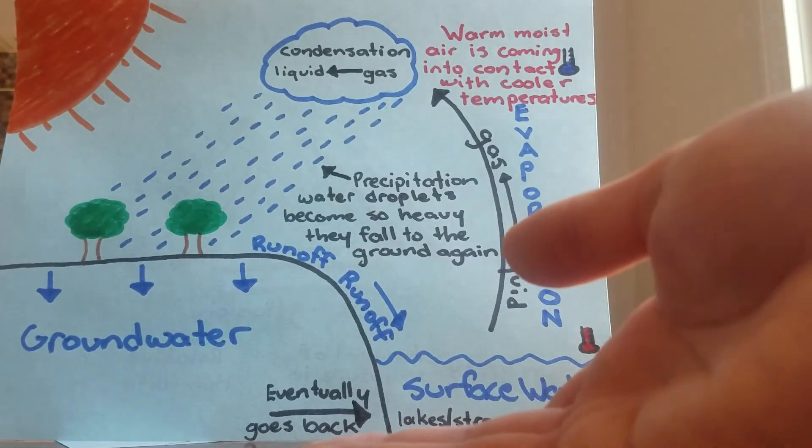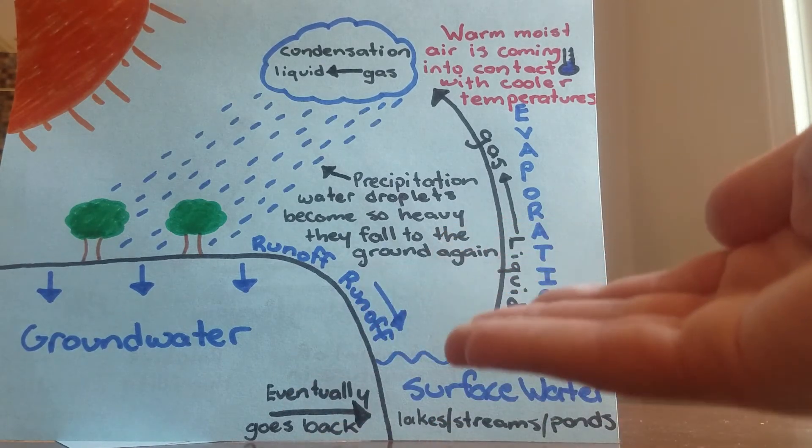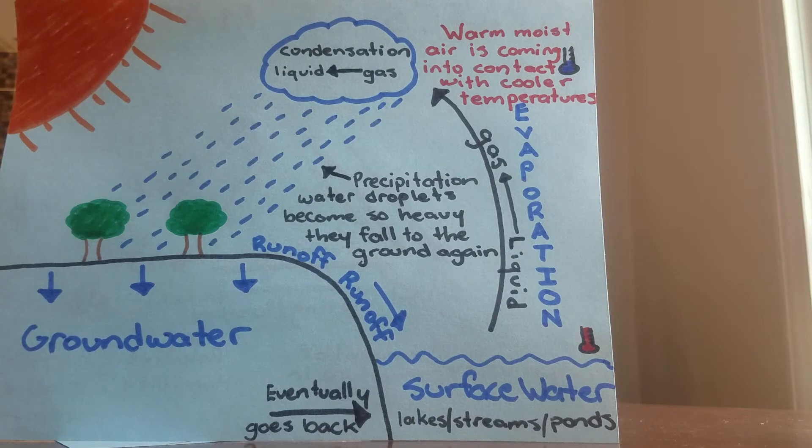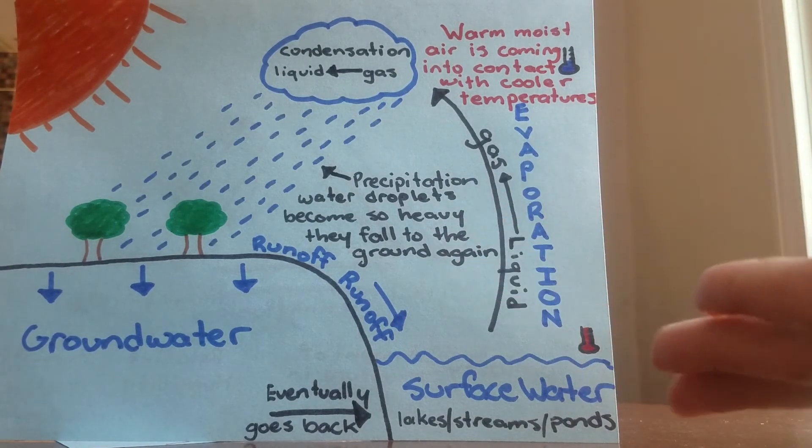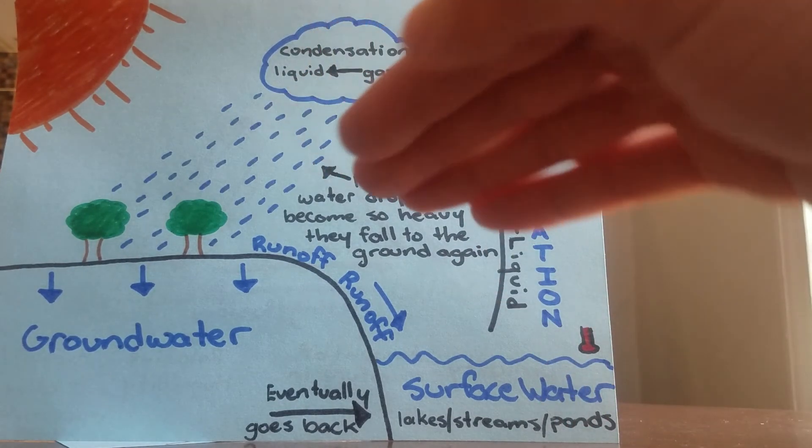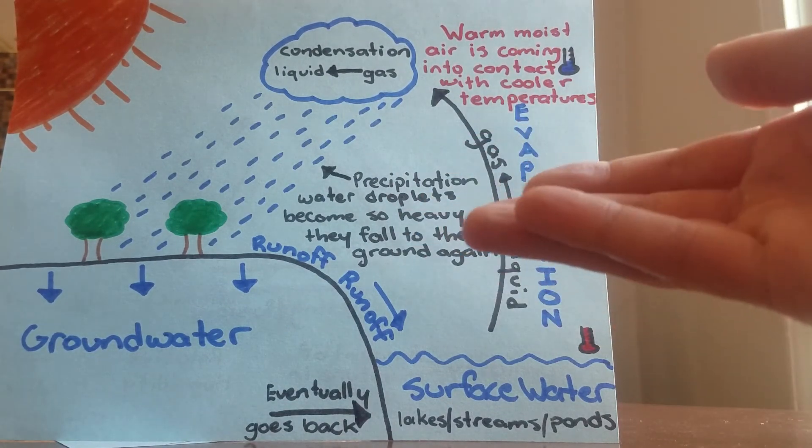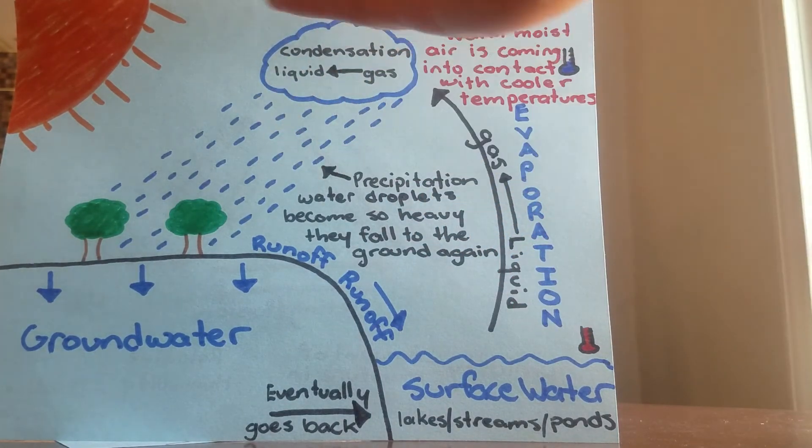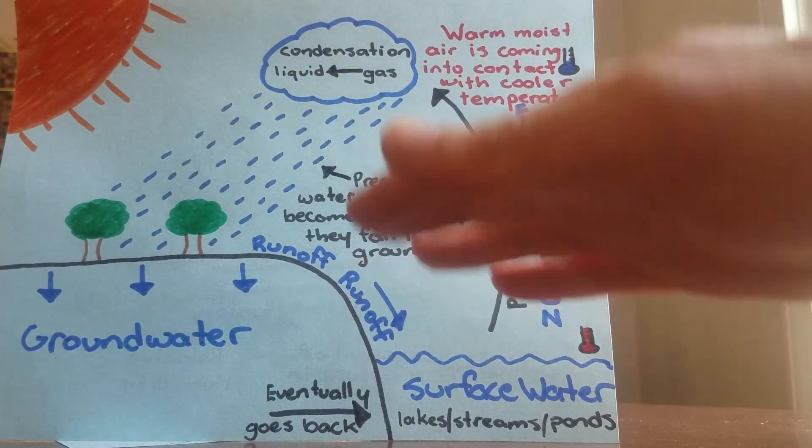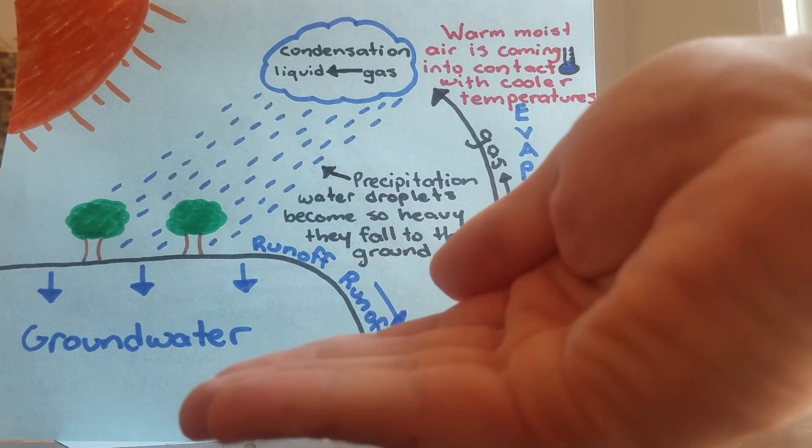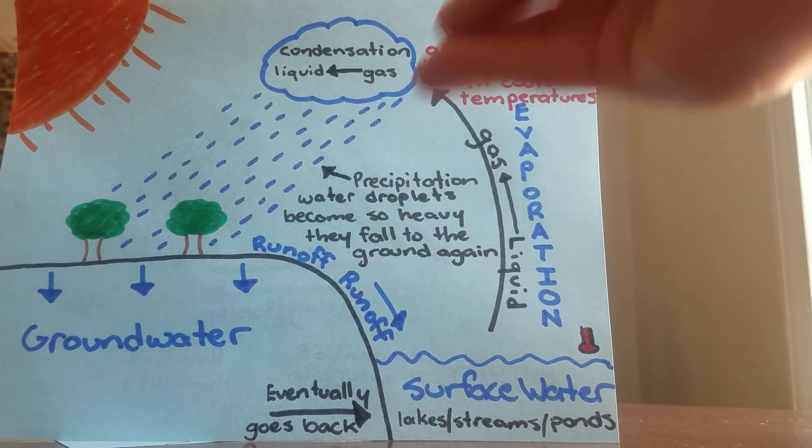That runoff water is going to fill up the surface water of our planet. Warmer temperatures are going to turn that cooler water into a gas. That gas is going to rise high up into the sky as water vapor, and then eventually it's going to be converted back into a liquid again by condensation. And this is actually what clouds are.